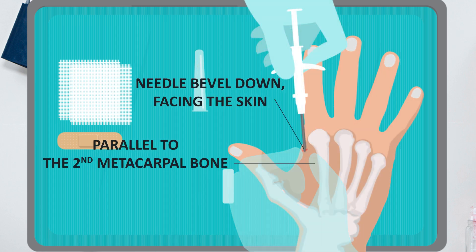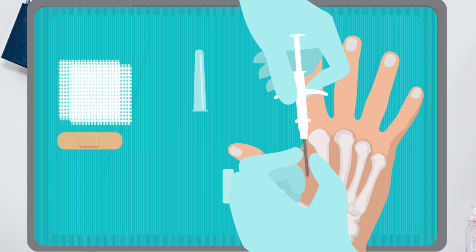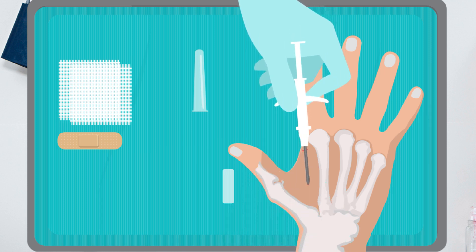Insert the needle parallel to the second metacarpal bone near the head, advancing proximally toward the trapezoid bone. The shaft of the needle should be inserted nearly to the hub, then retracted approximately 12 mm.